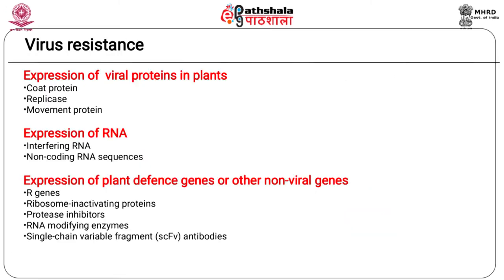Virus resistance in plants can be achieved by genetic engineering approaches. Virus resistance can be conferred on plants by transferring virus-derived genes including viral coat protein (CP), replicase, movement protein, defective interfering RNA, and non-coding RNA sequences into susceptible plants. Non-viral genes like R genes, ribosome inactivating proteins, proteinase inhibitors, RNA modifying enzymes, and single chain variable fragment antibodies have also been used successfully to engineer resistance to viruses in plants.